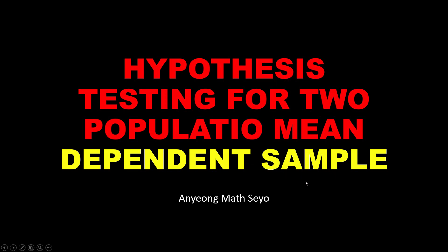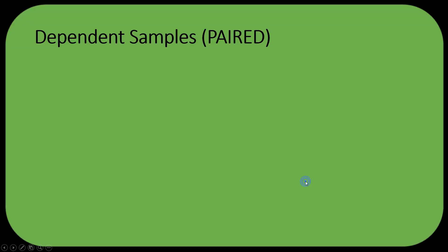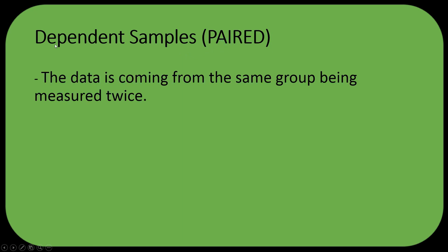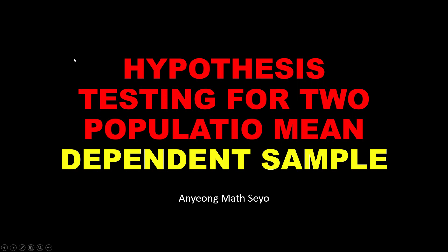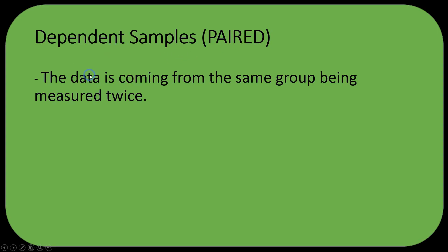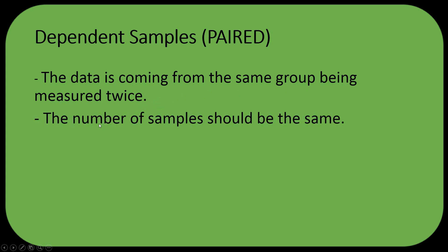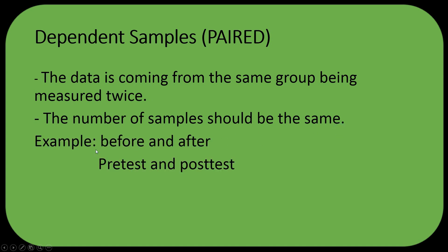We have the hypothesis testing for two population means, dependent sample. For the dependent sample or the paired sample t-test, the data is coming from the same group being measured twice. The number of samples should be the same. Examples include before and after, pre-test and post-test.